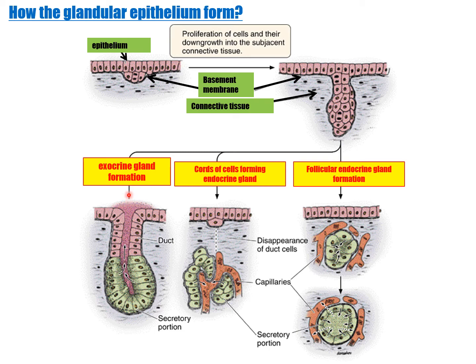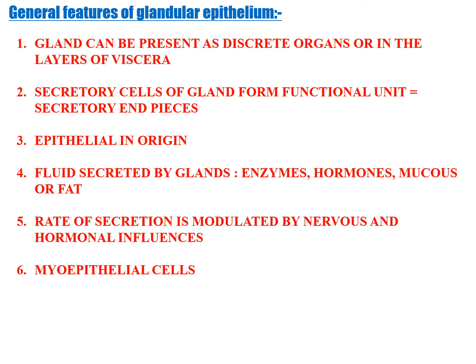Glands are under hormonal or nervous control through chemical messengers. They may be exocrine (duct present) or endocrine (duct absent). The general features: glands can be present as discrete organs or in layers of viscera. Secretory cells form the functional unit called the secretory end piece. Fluid secreted by the gland may be enzymes, hormones, mucus, or fat. The rate of secretion is modulated by nervous and hormonal influence.